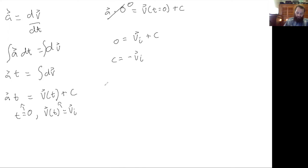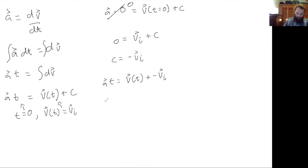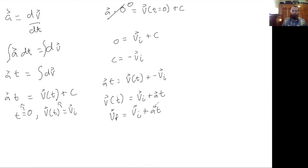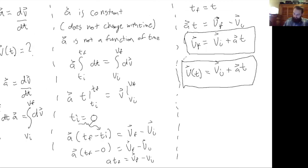Plugging that back into our equation: a·t equals v as a function of t plus c. Substituting negative v-initial for c and solving for v(t), we get v-initial plus a·t — which is the same equation we derived previously. I wanted to show this example of an indefinite integral and how to use boundary conditions, because this is very useful as you go through your physics career.